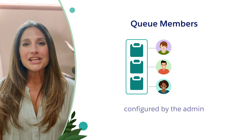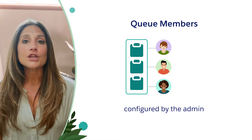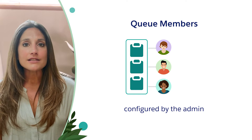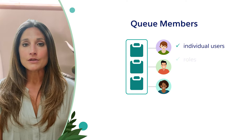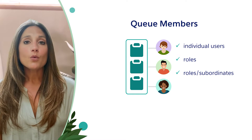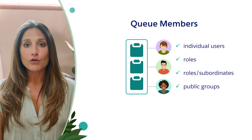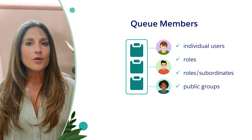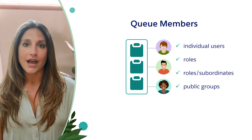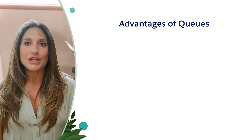An admin can choose which users can join queues as queue members. Queue members can consist of individual users, roles and roles with their subordinates — which align to the role hierarchy — and public groups, which are commonly used when creating sharing rules for record-level access.